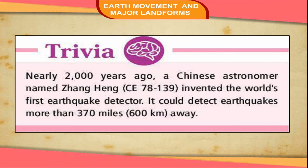Trivia: Nearly 2,000 years ago, a Chinese astronomer named Zhang Heng (CE 78–139) invented the world's first earthquake detector. It could detect earthquakes more than 370 miles (600 kilometers) away.